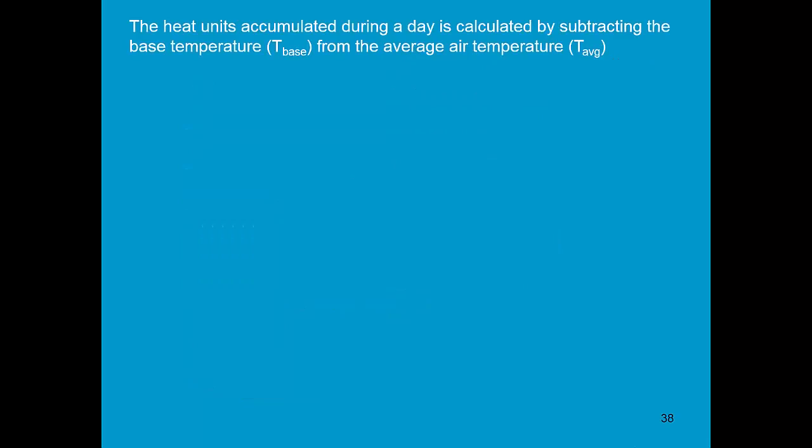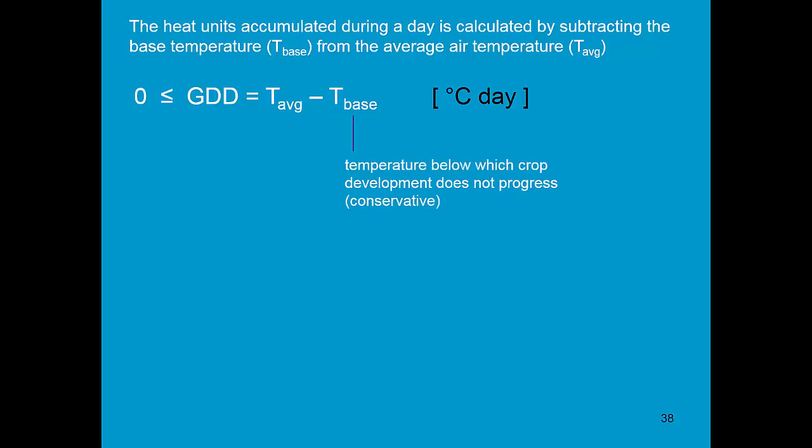The heat units accumulated during a day are calculated by subtracting the base temperature from the average temperature. So growing degree days equals average temperature minus T base, where T base is the temperature below which crop development does not progress. It is a conservative crop parameter. If the average temperature is below T base, no heat units can be accumulated during that day, and growing degree days is zero.